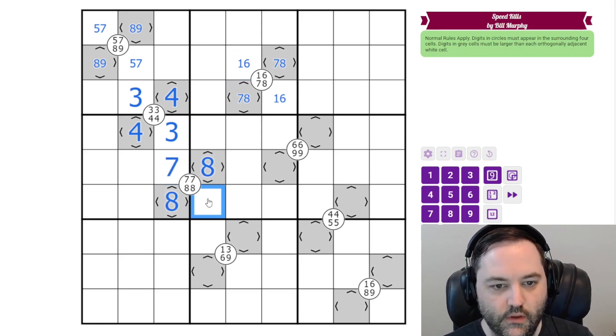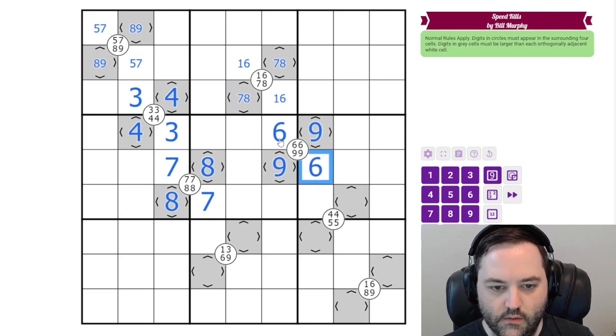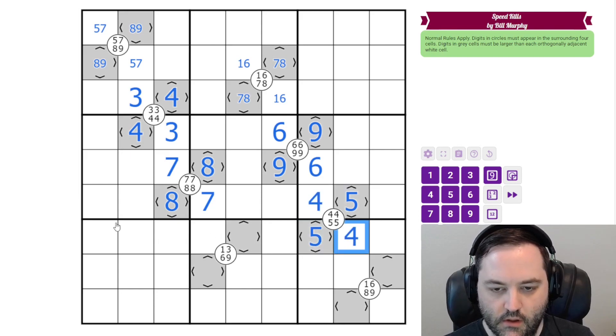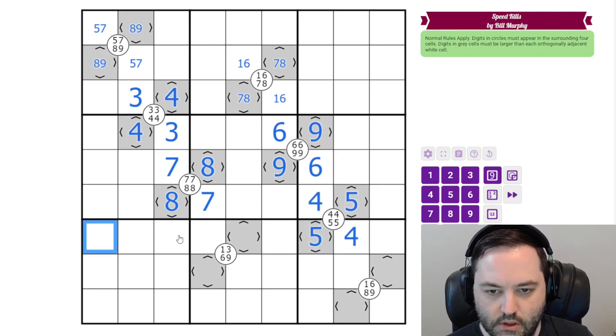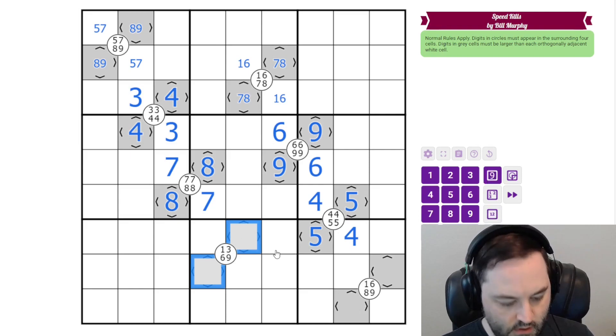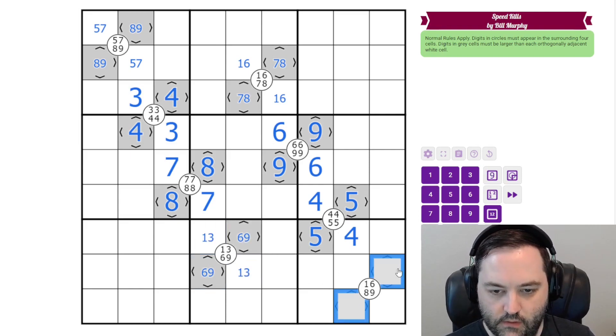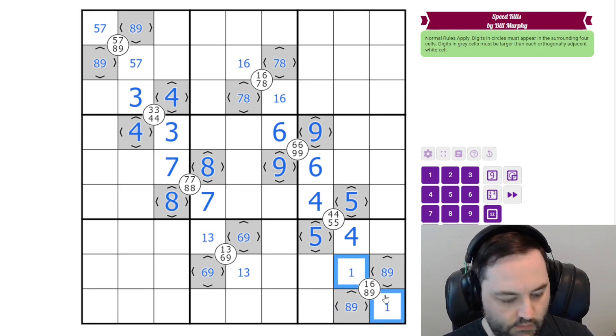Now we're just going to keep doing this through the puzzle. So both of those were doubles. This is another double, so just putting the bigger digit in the gray cell. These are 6 and 9 and these are 1 and 3. These are 8 and 9 and these are 1 and 6.